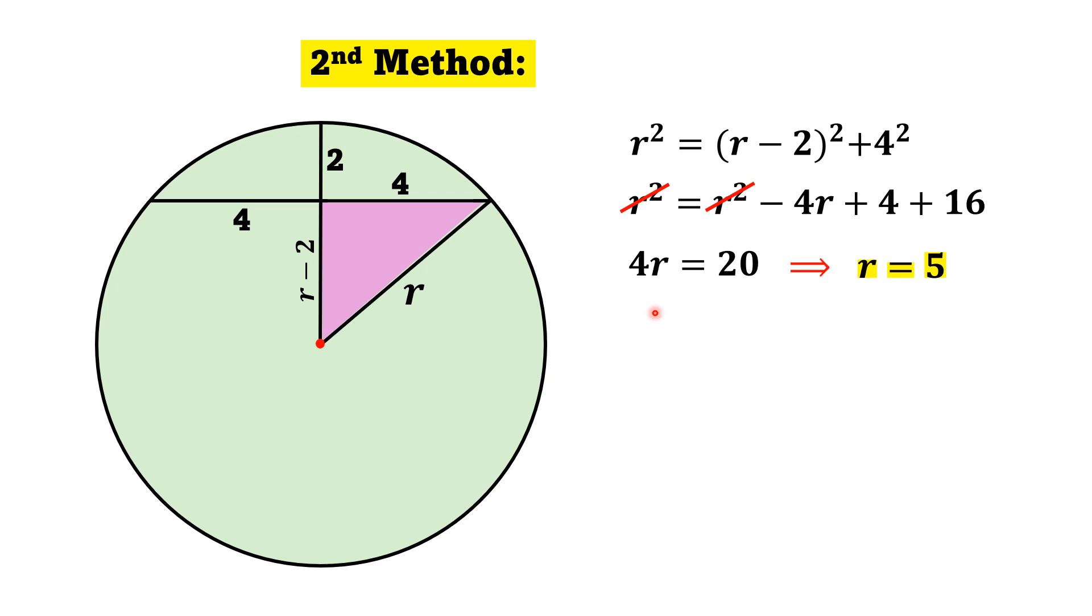Again, area of the circle is equal to pi R square. That will be equal to pi times 5 square. And thus, the area of the circle will be 25 pi square units. That is the answer.